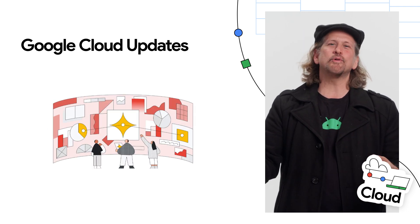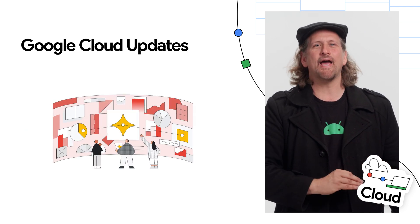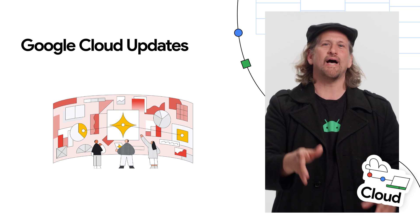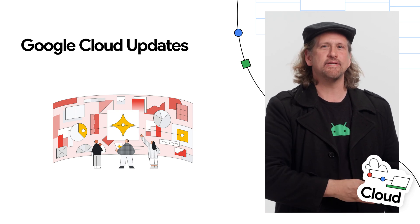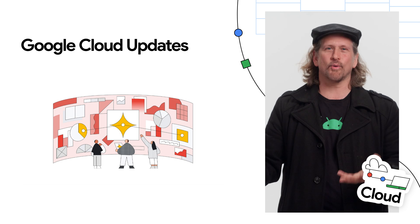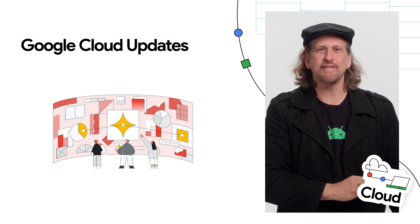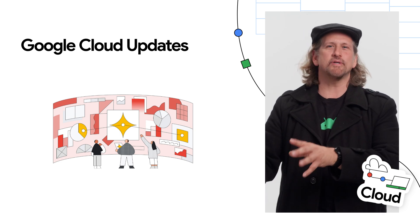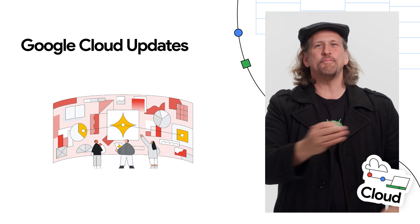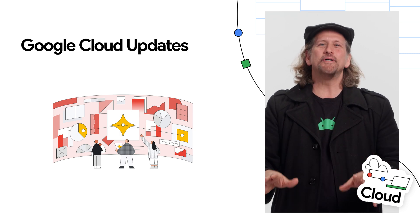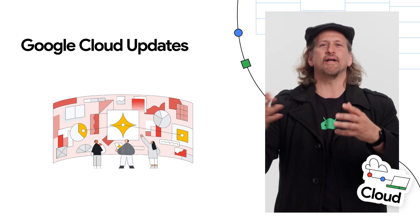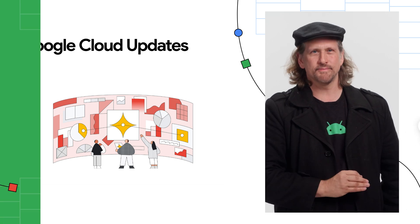Datastream, Google Cloud's fully managed change data capture service, is including support for SQL Server sources on top of its existing support for MySQL, PostgreSQL, and Oracle sources, empowering you to replicate data to Google Cloud services such as BigQuery, Cloud Storage, AlloyDB, and Spanner. You can now also build and run SSRS reports with databases hosted on Cloud SQL for SQL Server.